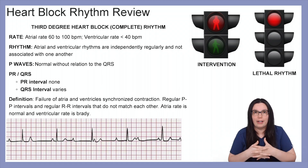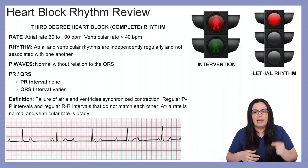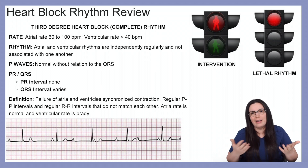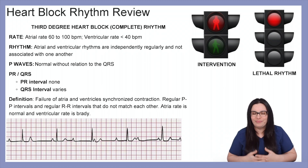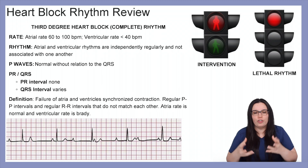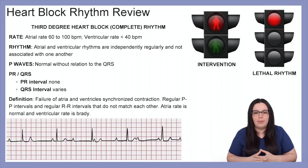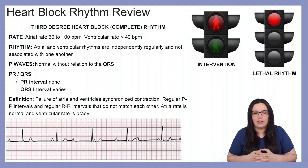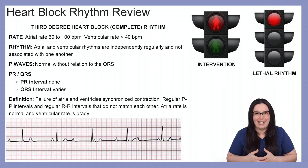The P waves will be normal without any relation to the QRS. There is no PR interval because the atria and ventricles are not communicating with each other, and the QRS interval will vary. The definition is a failure of the atria and ventricles to synchronize contraction — regular P-to-P intervals and regular R-to-R intervals that do not match one another, with the atrial rate normal while the ventricular rate is bradycardic.